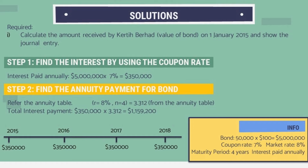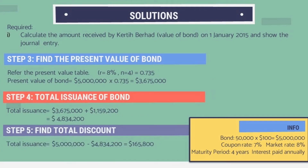The total interest payment is $1,159,200. Next, we find the present value of the bond by referring to the present value table at the effective rate of 9% for 4 years. The present value factor is 0.735. So the present value of the bond is $5,000,000 multiplied by 0.735, which equals $3,675,000.